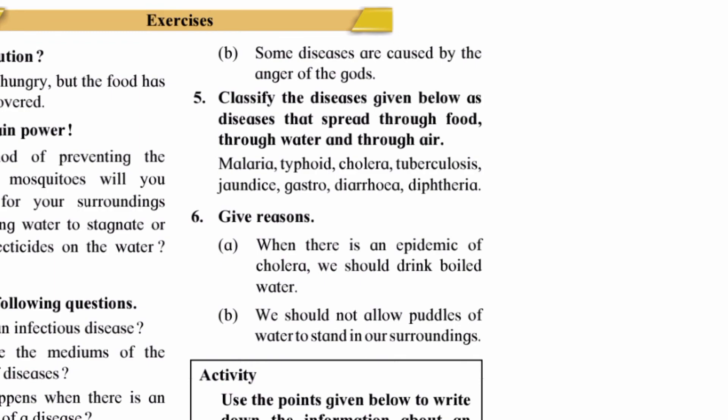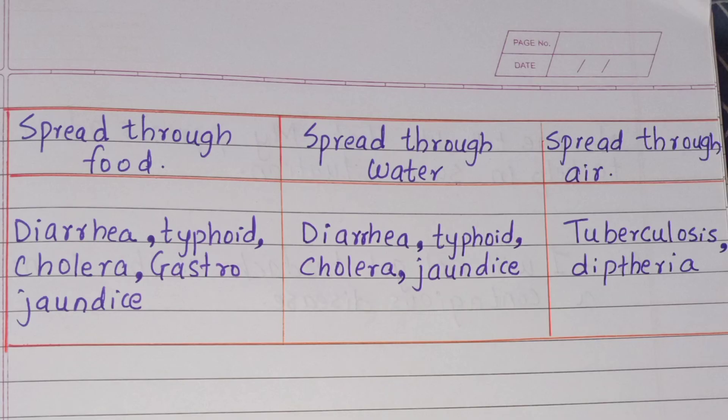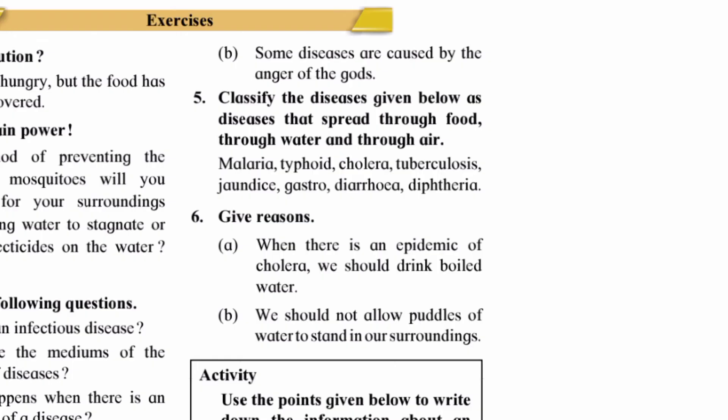Question five: Classify the diseases given below as diseases that spread through food, through water, and through air. Diseases spread through food: diarrhea, typhoid, cholera, gastro, jaundice. Diseases spread through water: diarrhea, typhoid, cholera, and jaundice. Diseases spread through air: tuberculosis and diphtheria.